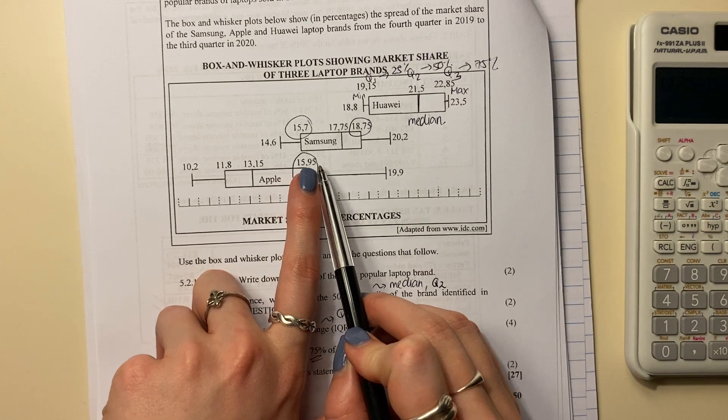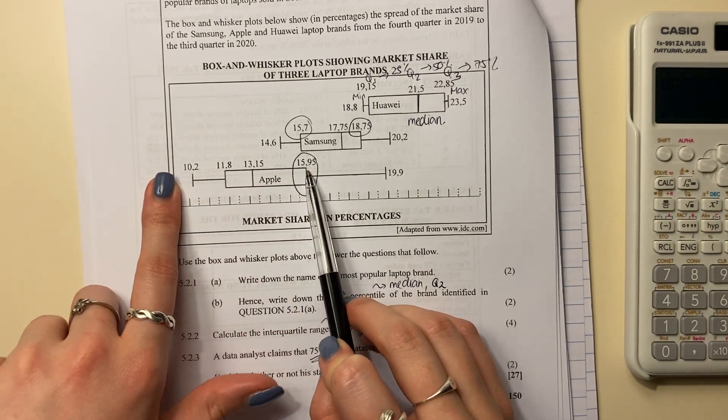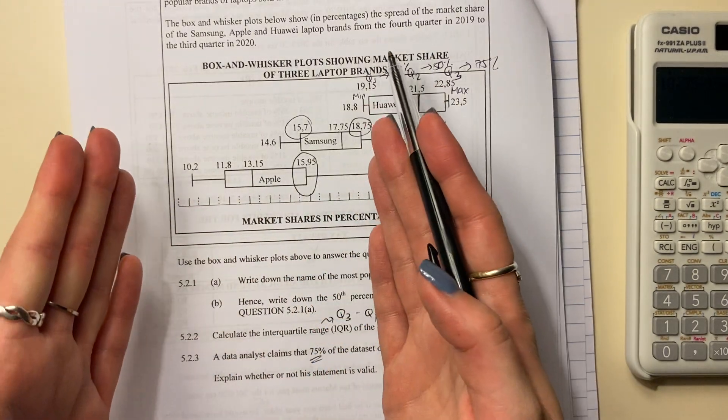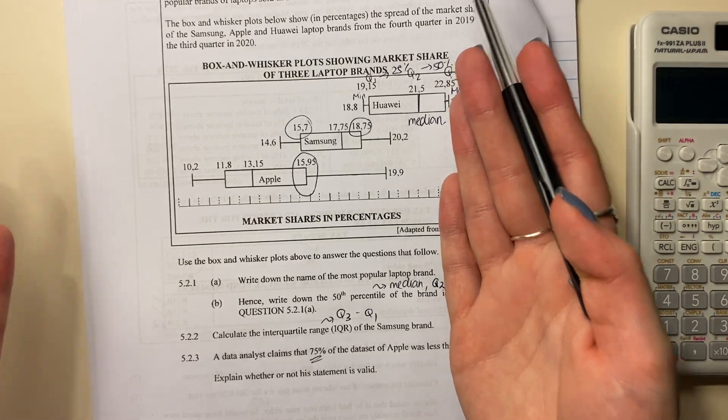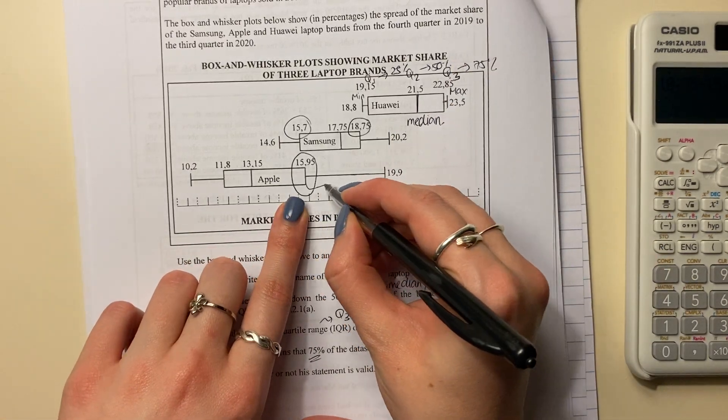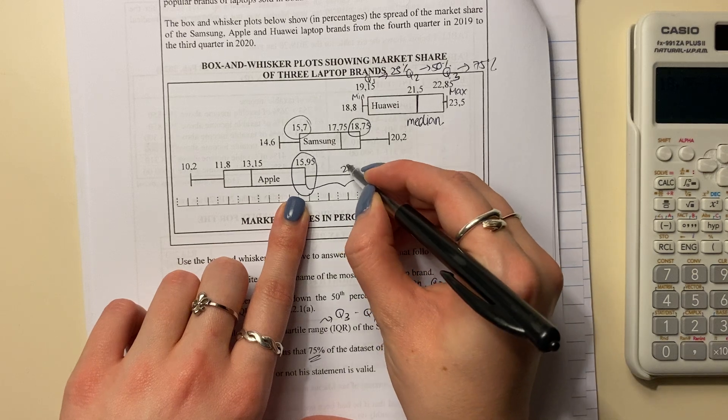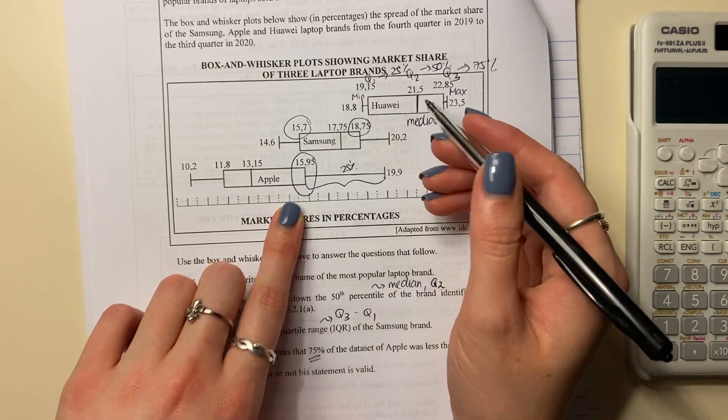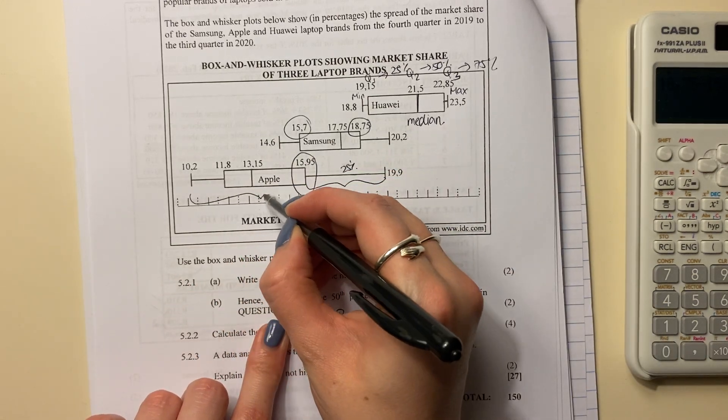Everything below there accounts for 75% of all the data points that we have on Apple. So between here and here, that's just 25%. Why? Because between here and here is 75%.